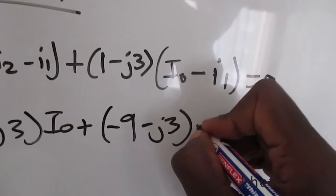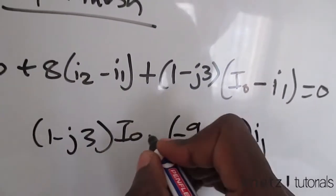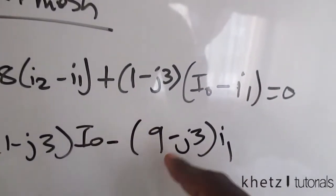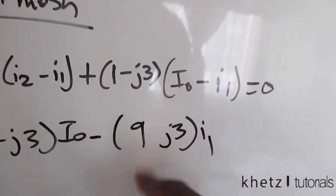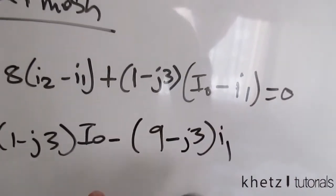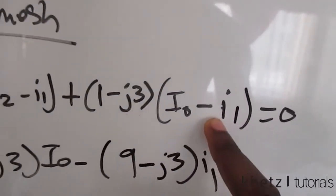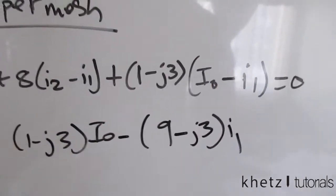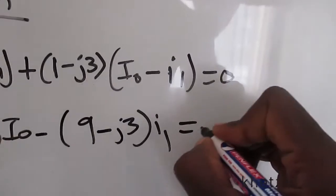Factoring out the negative from the I1 terms: negative j3 multiplied by negative I1 is actually positive, so that confirms the sign. Taking the constant 10 to the other side of the equals sign, we have our third equation finalized.